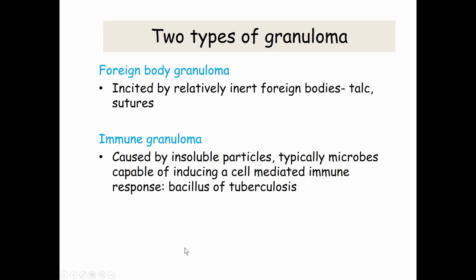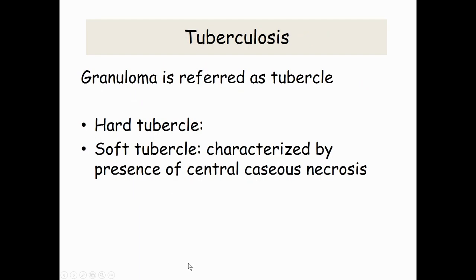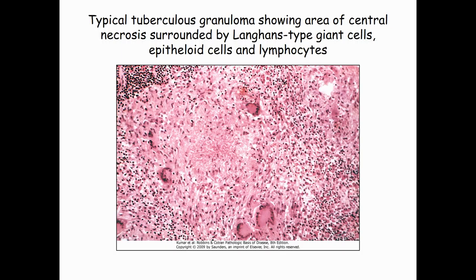There are two types of granuloma: foreign body granuloma and immune granuloma. A granuloma is referred to as a tubercle — either a hard tubercle or a soft tubercle. Soft tubercles have central caseous necrosis inside. This is a picture of a typical tuberculous granuloma showing an area of central necrosis surrounded by Langhans-type giant cells, epithelioid cells, and lymphocytes.